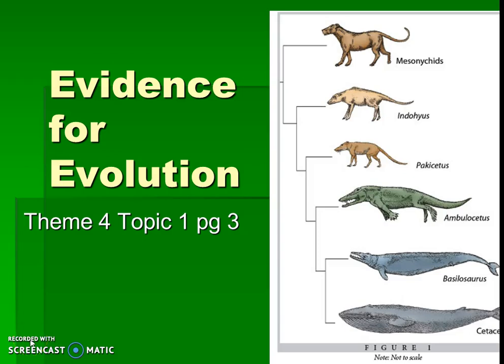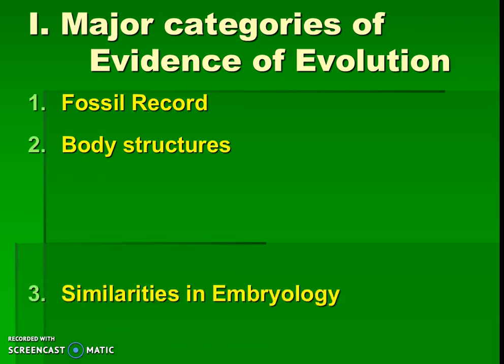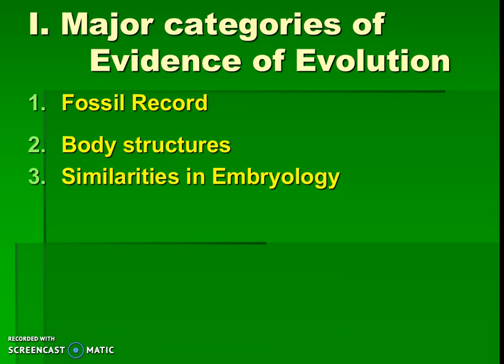Hello biology students. Today we're going to be talking about the different types of evidence for evolution, which helps us figure out common ancestors as well as what that ancestor way back looked like. There are four major categories of this type of evidence: the fossil record, body structures, similarities in embryology, and biochemistry. We're going to go through each of these in detail.